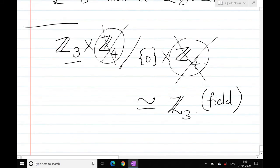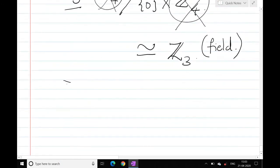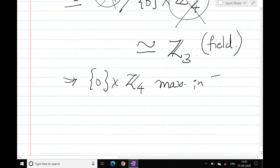Do not cancel this, it's just a trick to remember. This is a field. So this means that {0} cross Z4 is a maximal ideal in Z3 cross Z4. So this is how you check maximum ideals.